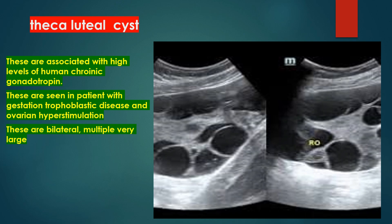Theca luteal cysts. These are associated with high levels of human chorionic gonadotropin. They are seen in patients with gestational trophoblastic disease and ovarian hyperstimulation. These are bilateral, multiple, and very large cysts.